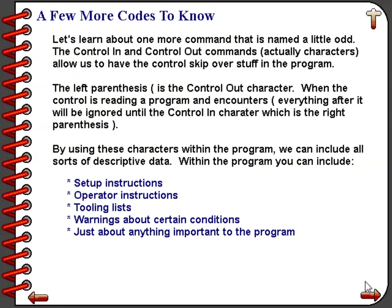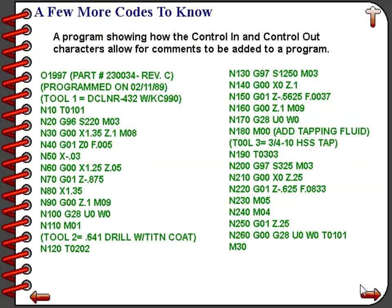Let's learn about a few more commands called the control in and control out commands — their name is a little odd. Here is a program showing minimal use of these comment characters. On the program label line, the comment characters contain the part number and a revision number. When you do a directory or library listing on the CNC control, the information in those comments will show up with the program label, which is helpful to setup people and operators.